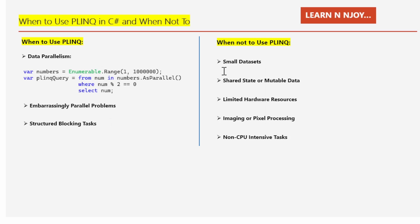Now let's talk about when PLINQ might not be the best fit. Number one: small datasets. For small datasets or operations that are inherently sequential and don't benefit from parallelism, using PLINQ might introduce unnecessary overhead without any performance boost. Number two: shared state or mutable data. PLINQ assumes data being operated on is immutable or not modified during parallel execution. If your operation involves shared mutable state, you might run into race conditions and data consistency issues.